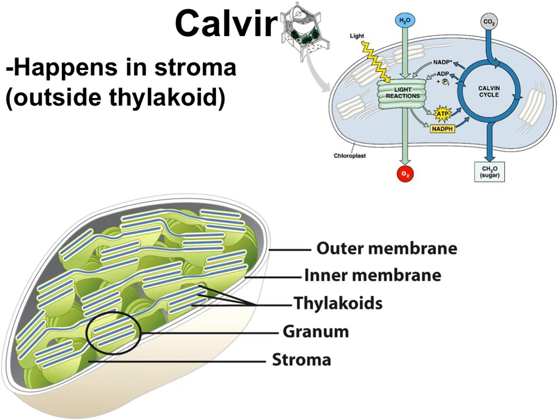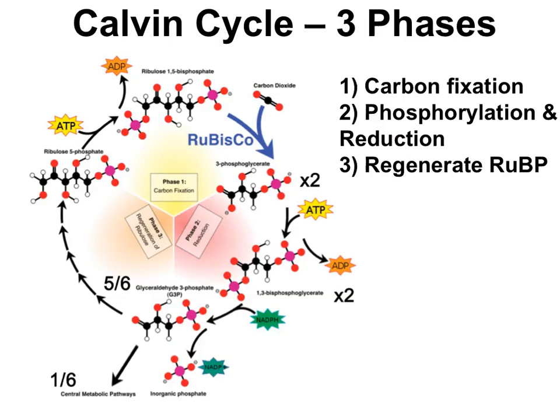The Calvin Cycle takes place in chloroplasts, and more specifically, the Calvin Cycle takes place in the stroma, which is inside of the inner membrane of the chloroplast, but outside of the thylakoids.